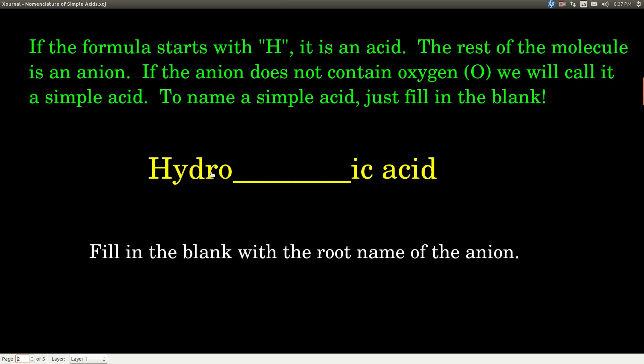The formula will always look like this: hydro-blank-ic acid. You're just filling in the blank. What goes in the blank? The root name of whatever the anion is. Fill it in, and you got it.